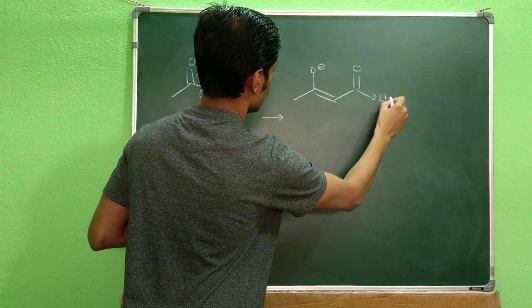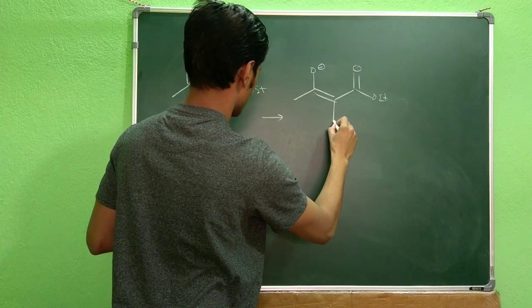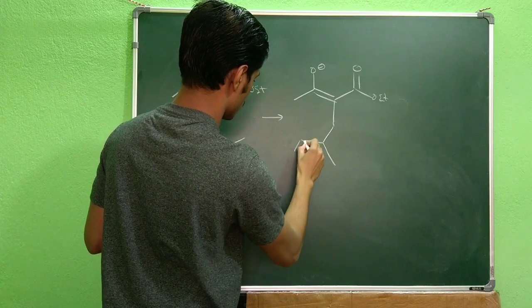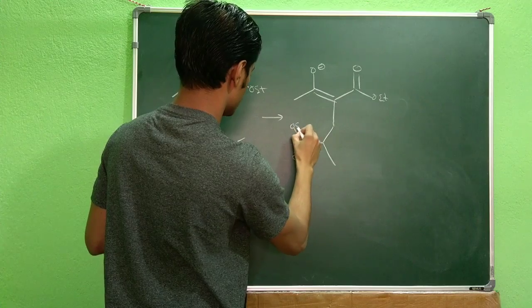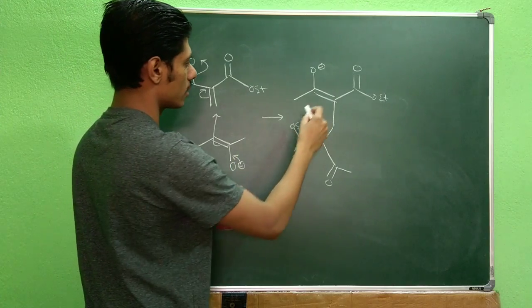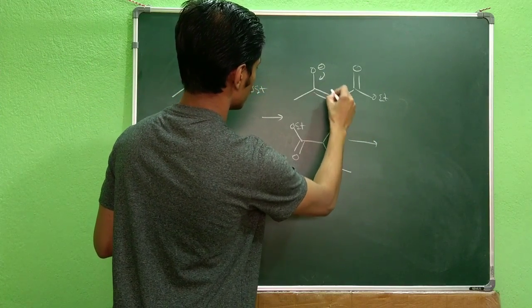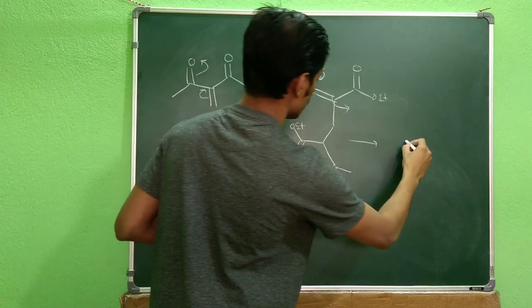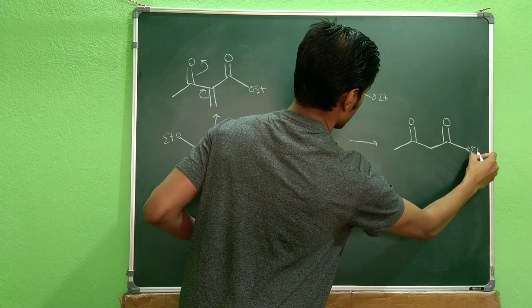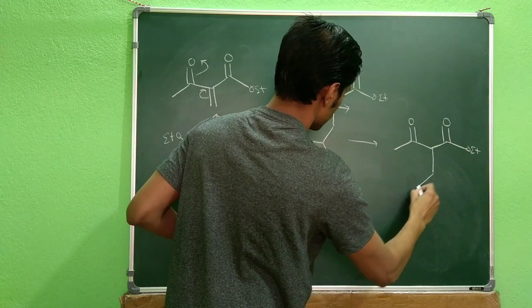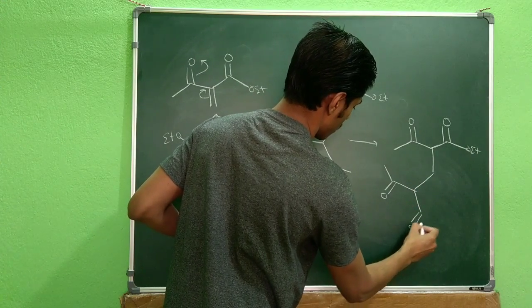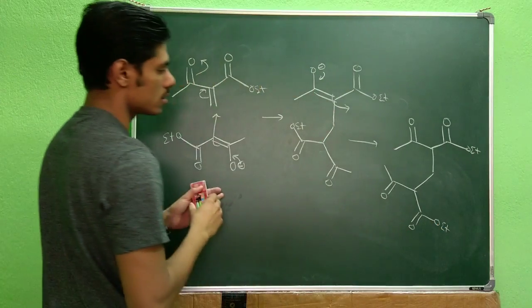From this Michael addition, what you will get basically is this product. Here we have OEt, and what you get has an O and OEt groups — the Michael addition product. Then this enolization will eventually give you this product, where you have the COOEt group. I am just rotating the structure.